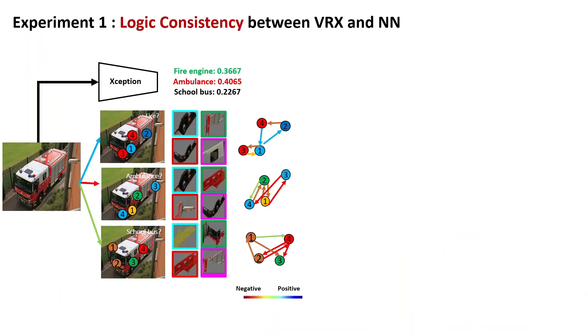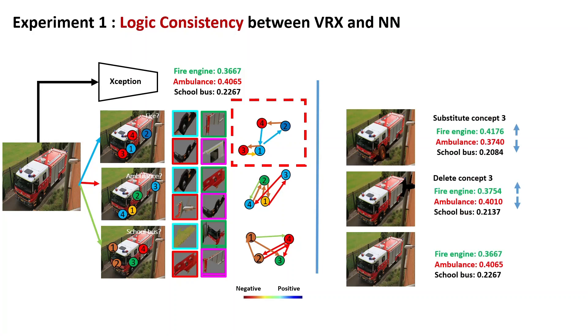The first experiment is to verify that the explanation of VRX is logically consistent with its original network. When the network wrongly predicts the fire engine as an ambulance, VRX can explain the error. It is because the detected fire engine concept 3 and 4 have negative contributions to correct prediction. To verify the logic consistency, we substitute the bad concept 3 with good concept 1 from another fire engine image, and the network re-predicts the class of the modified image. It corrects the error and predicts correctly.